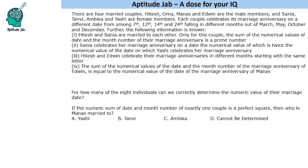Hello everyone, welcome to Aptitude Jab. This set says that there are four married couples. Hitesh, Oumu, Manas and Edwin are the male members, and Sanya, Tanvi, Ambika and Yashi are the female members. Each couple celebrates their marriage anniversary on a different date. These are four dates in different months, so we are given the names of months as well.